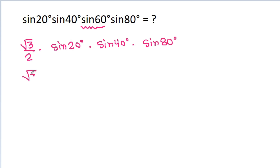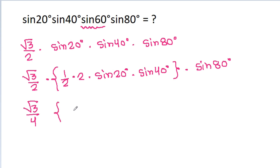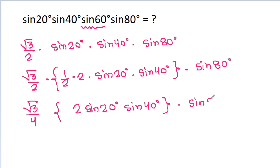It is √3/2 times sin 20° × sin 40° × sin 80°. We can write sin 20° × sin 40° as (1/2) × 2 sin 20° × sin 40° × sin 80°. And √3/2 × 1/2 gives us √3/4, so the expression is √3/4 times 2 sin 20° × sin 40° × sin 80°.